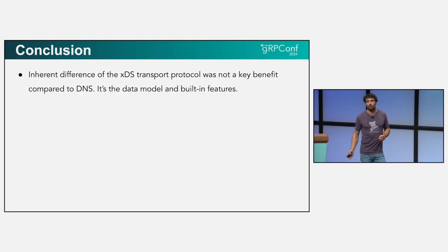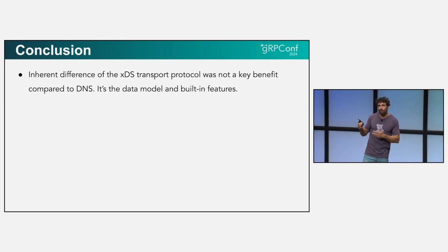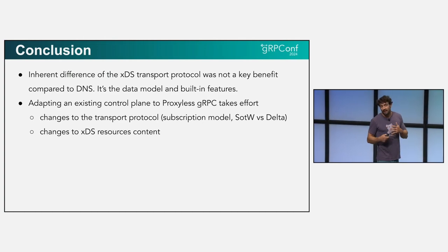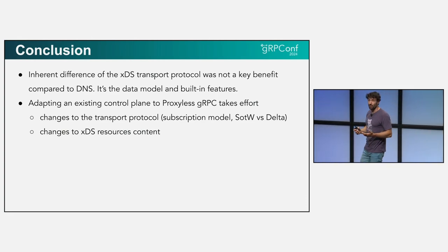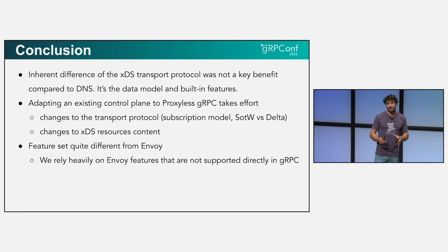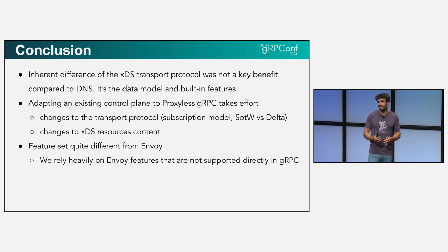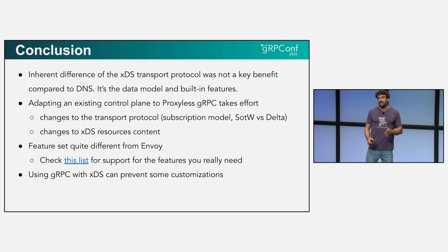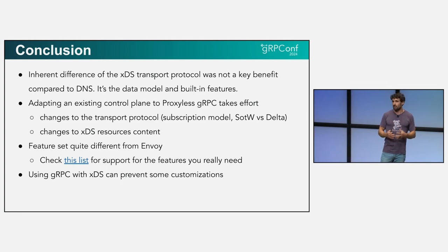To conclude: there's an inherent difference in the XDS transport that was not really a key benefit for us compared to DNS — it's really the data model that is important. Adapting our XDS control plane was actually quite a big effort, more than we anticipated. There are changes to the transport and changes to the XDS resources themselves. The feature set is also quite different — this is clearly something you need to research. If you have an existing control plane, make sure the features you rely on are implemented on the gRPC side. Also be aware that some gRPC customizations you may be doing might not be possible when you switch to gRPC XDS.